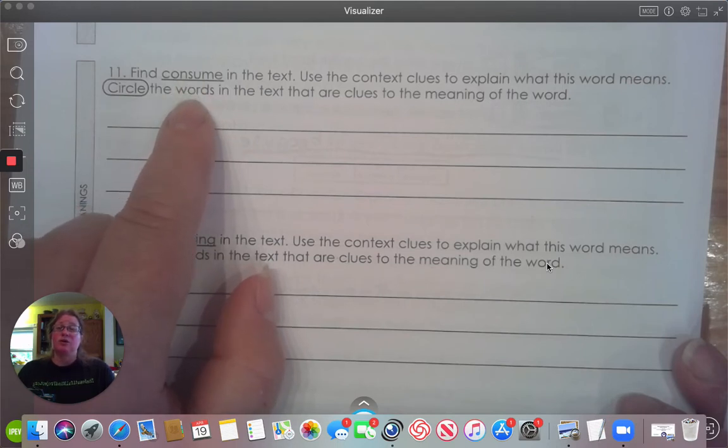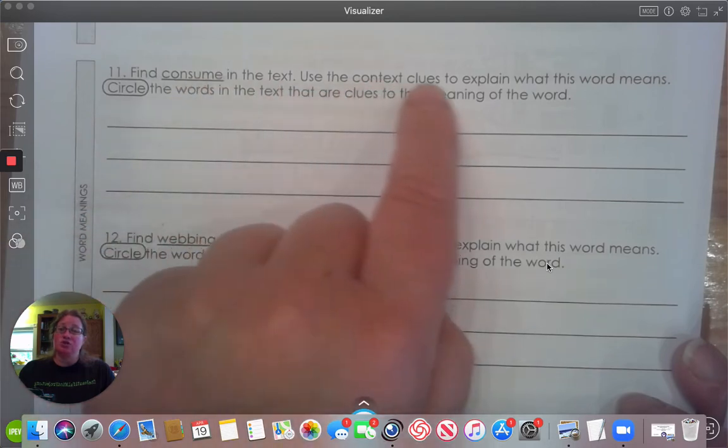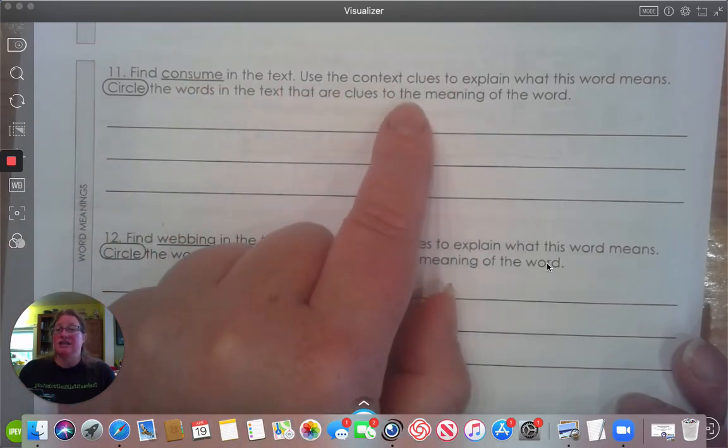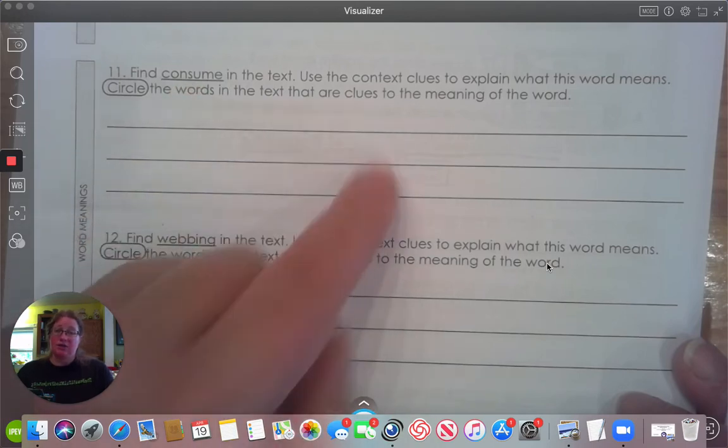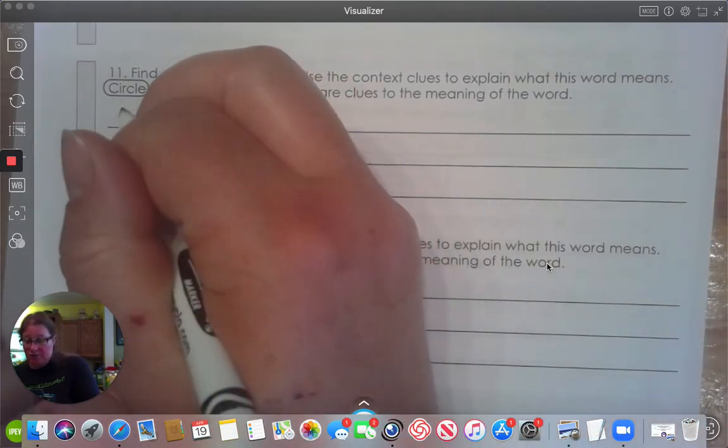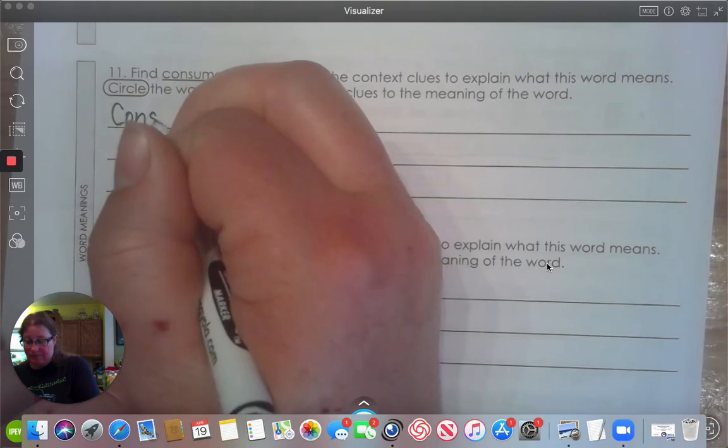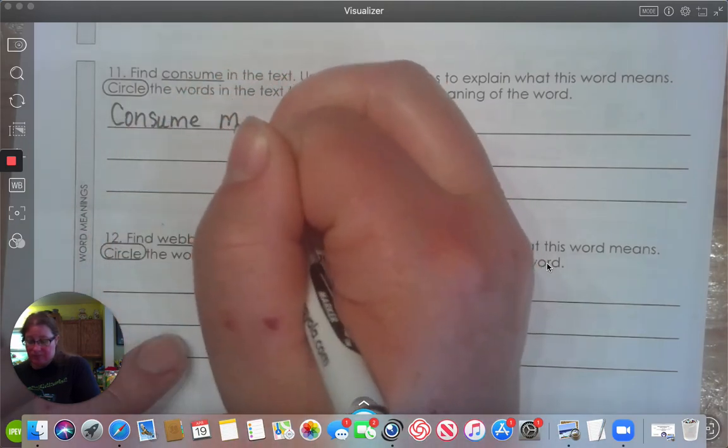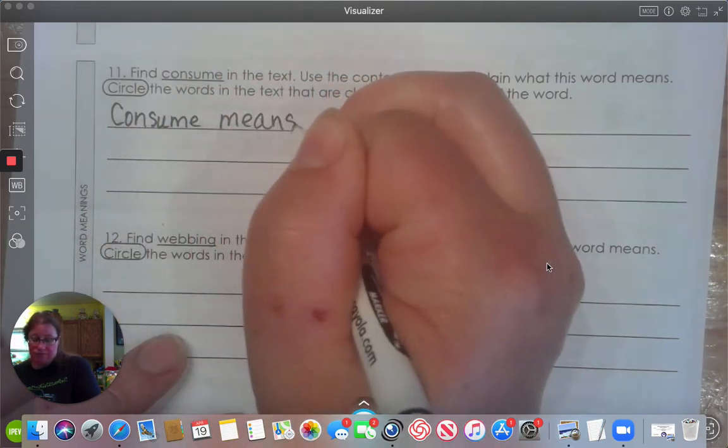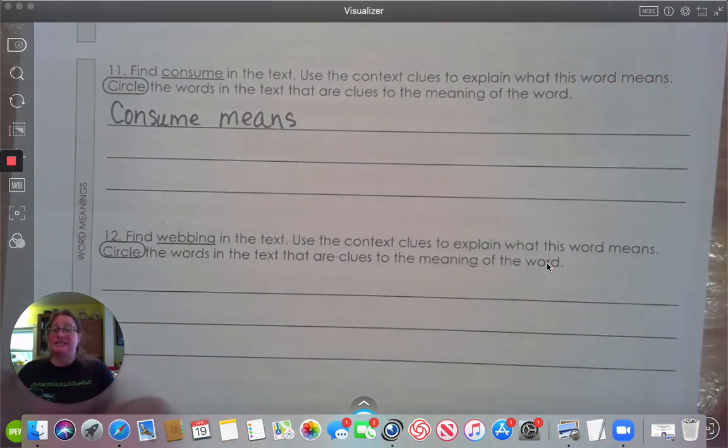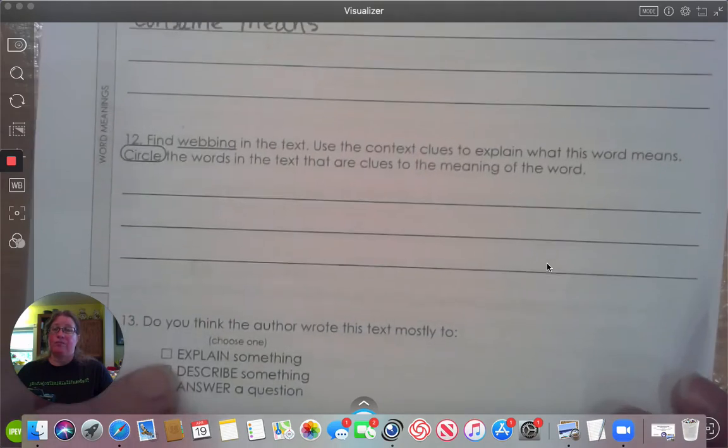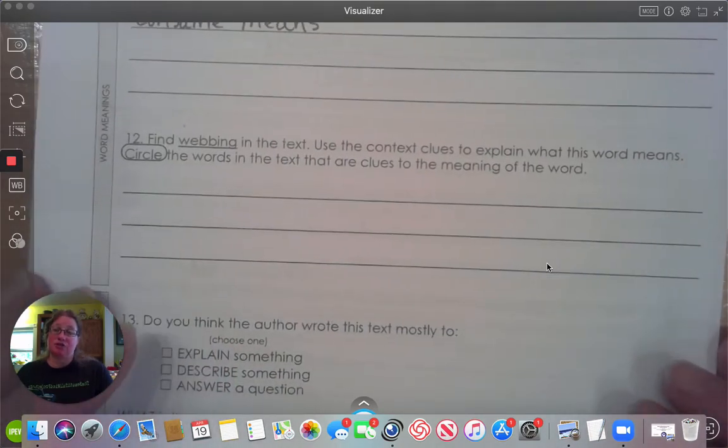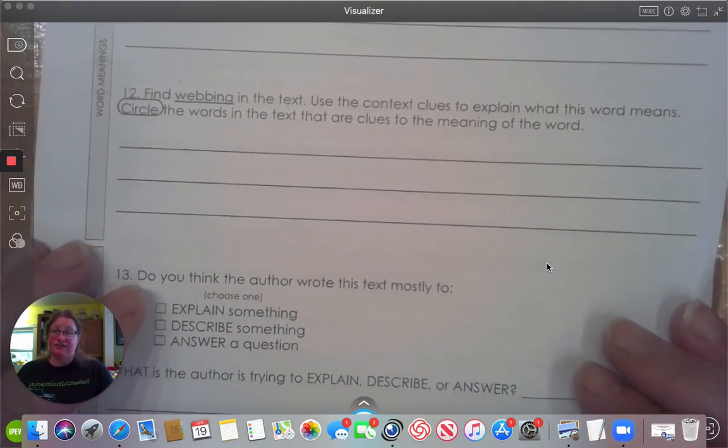So once you find the word, circle the context clues that tell you what consume means. And then you will write consume means. And you will finish that sentence. Make sure you have capital letters, punctuation, five to seven words.